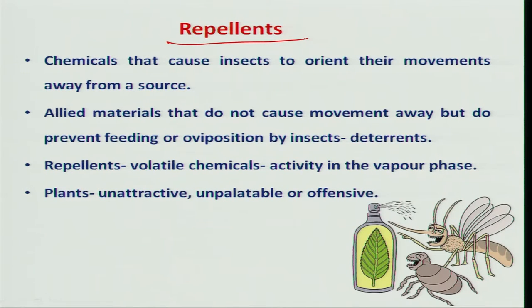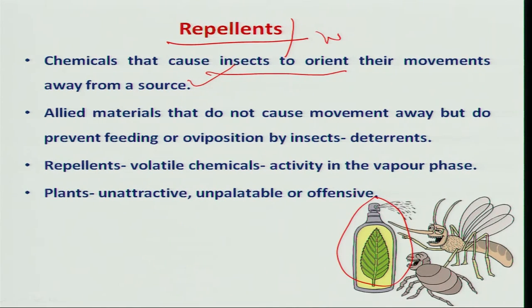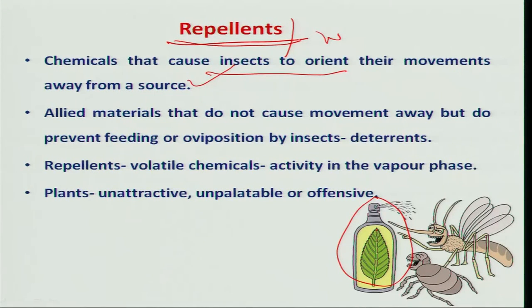Repellents cause insects to orient their movement away from the source — the opposite of attractants. Repellents can also work as feeding deterrents. After a few hours of treatment, when the repellent loses efficacy, insects may sit on the treated surface but cannot feed. In this way, repellents also function as feeding deterrents. Many repellents are available from different chemical sources.